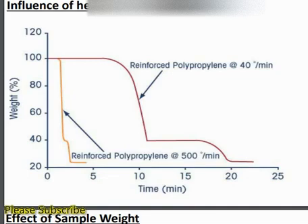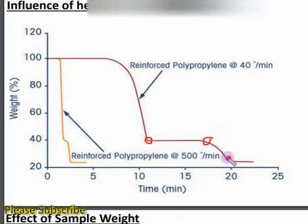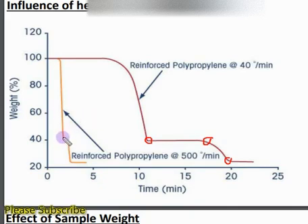Heating rate also influences the resolution of TGA curves. If the heating rate is slower, thermal equilibrium will be maintained and we get well-resolved peaks, because greater time is available for the thermal event. We get a clear and well-defined TGA curve with sharp corners and an exact temperature for the start and end of the event. However, if the heating rate is very high — for example 500°C per minute — the peaks are not well resolved and we are unable to identify the difference between thermal events.